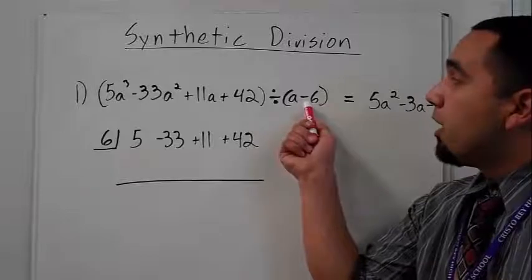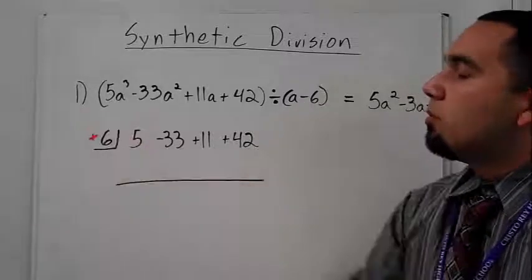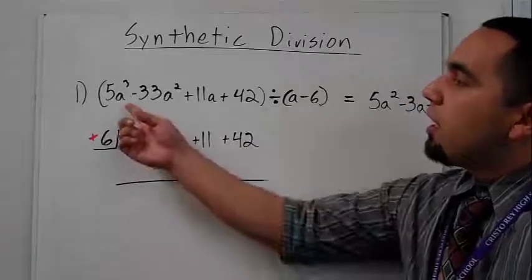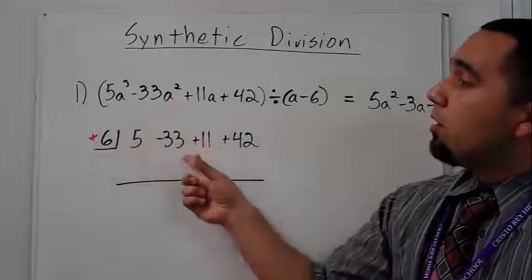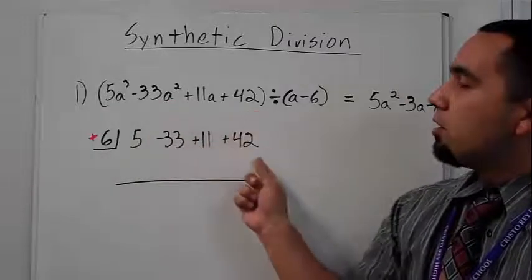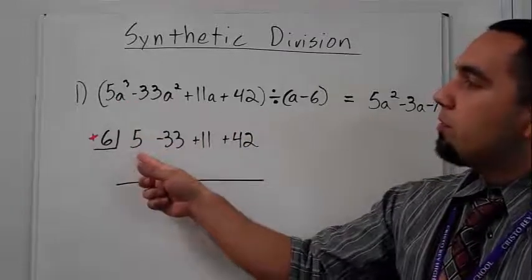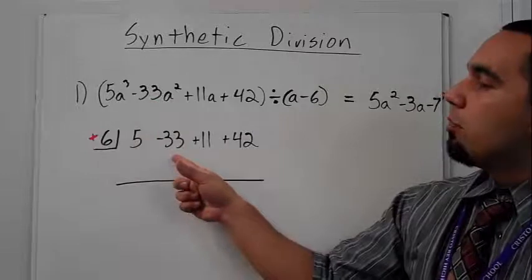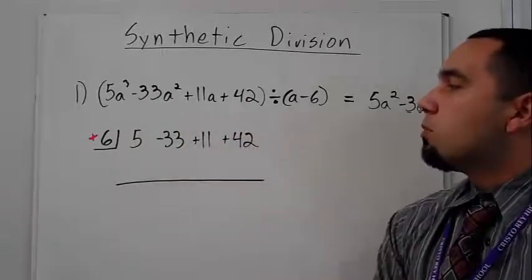But you do have to remember that since this is a negative six over here, this becomes a positive six. And all they've done is they've taken the coefficients of all of our terms and brought them down and left out the variables. So five a cubed becomes just five, negative 33 a squared becomes negative 33, and positive 11 a becomes just positive 11.